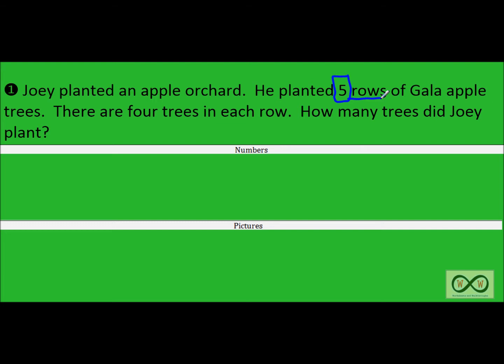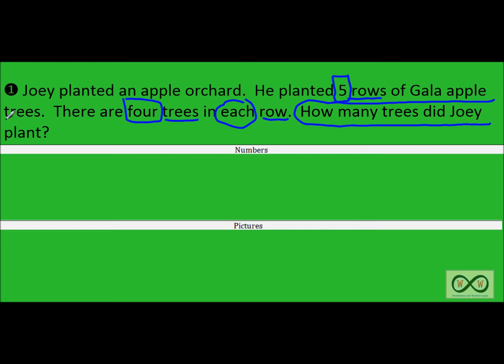Next sentence: There are four trees in each row. Some more math clues — four trees in each row. And here comes our math job. Often a math job will appear at the end of a word problem, in the form of a question: How many trees did Joey plant? That is our math job. We have five rows with four trees in each row, or five groups of four.